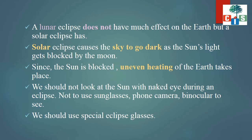This lunar eclipse does not have much effect on the Earth, but solar eclipse does. When a solar eclipse occurs, the sky goes dark as the Sun's light gets blocked by the Moon. Since the Sun is blocked, uneven heating of the Earth takes place. So we should follow some precautions while looking at the solar eclipse. We should not look at the Sun with the naked eye or directly, and should not look at the Sun through sunglasses, a phone camera, or binoculars. There are special eclipse glasses or eclipse filters which we should use while looking at the solar eclipse.